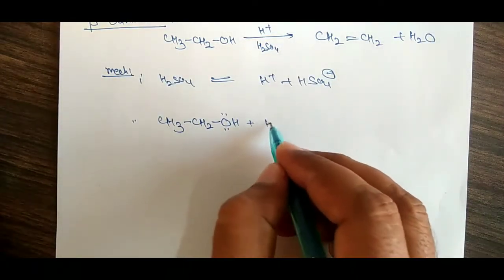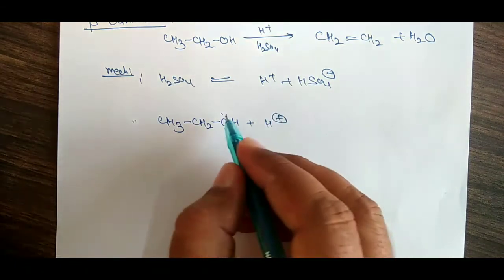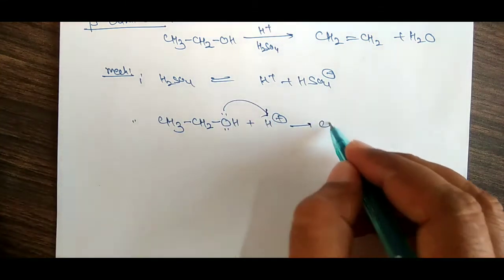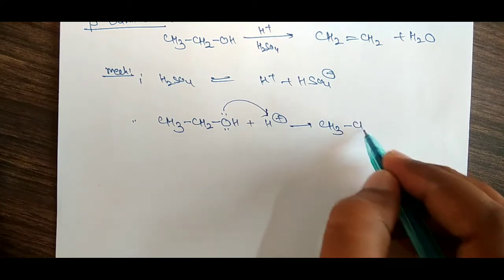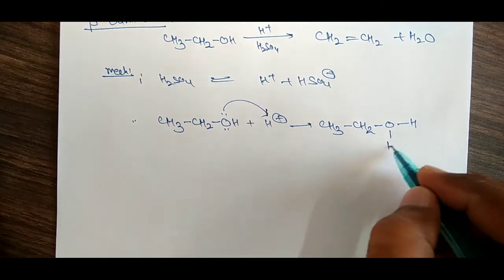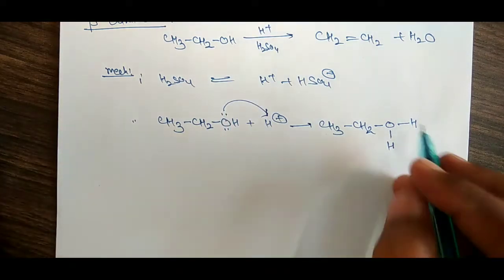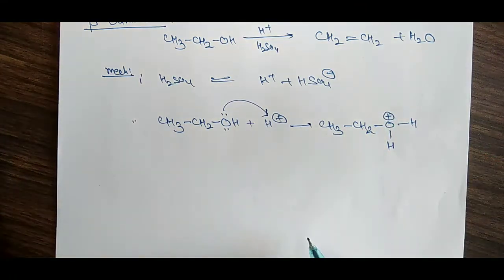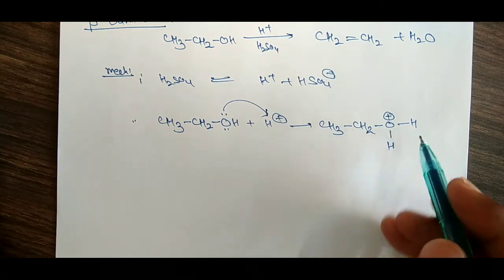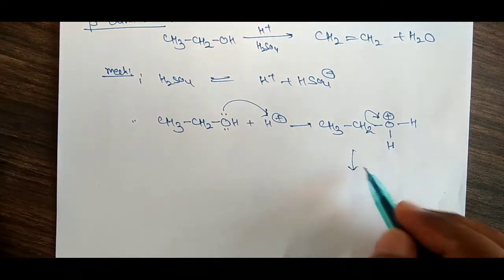The second step: we have CH3CH2OH — that is ethanol. H positive is added. Oxygen donates its lone pair to the H positive, and when oxygen donates its lone pair, oxygen carries a positive charge. Therefore, what we get is CH3CH2O(+)H2, and with loss of water.